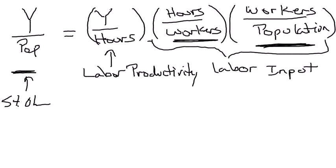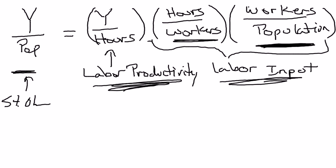So there's a firm limit on how high labor input can go. The highest workers as a share of population can go is 1, and the highest hours per worker can go is 8,760. This means there's a limit to how much labor input can contribute to increases in the standard of living. If there are perpetual increases in the standard of living — as there have been over the last couple hundred years — the only way that can be happening is if labor productivity is growing. You can get temporary boosts by having more people work or having workers work more hours, but eventually you reach the upper bound of what labor input can contribute.